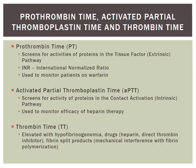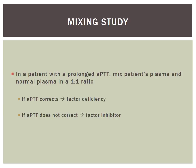In a mixing study for a prolonged APTT, you take the patient's plasma and mix it with normal plasma in a 1-to-1 ratio. If the APTT corrects with mixing, you should consider a factor deficiency — the missing factor is replaced by the normal plasma, correcting the PTT. If the APTT does not correct with mixing, you should suspect a factor inhibitor, because the inhibitor remains present in the patient's plasma and continues to inhibit the factors.